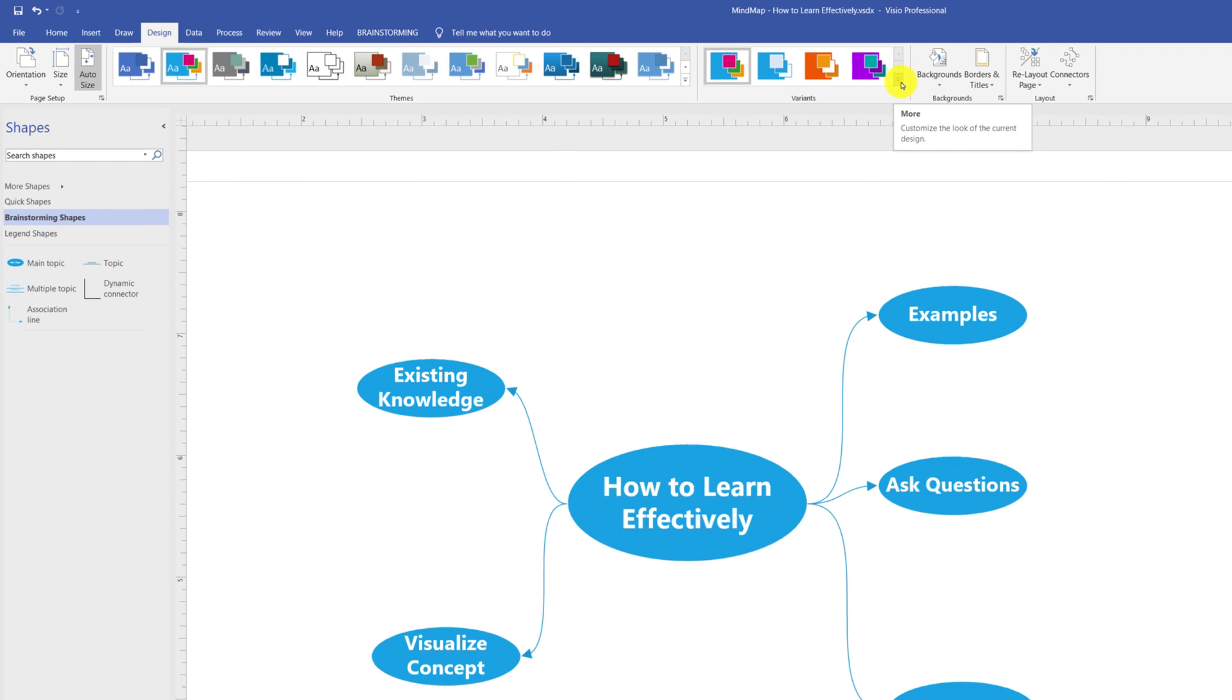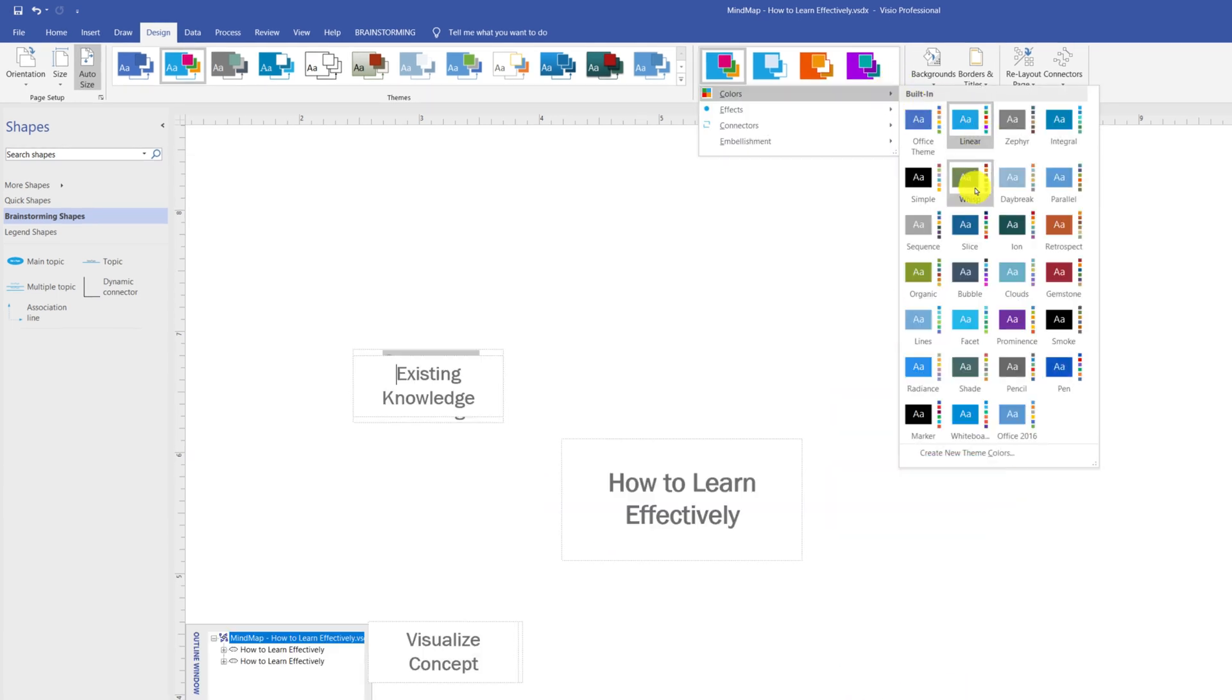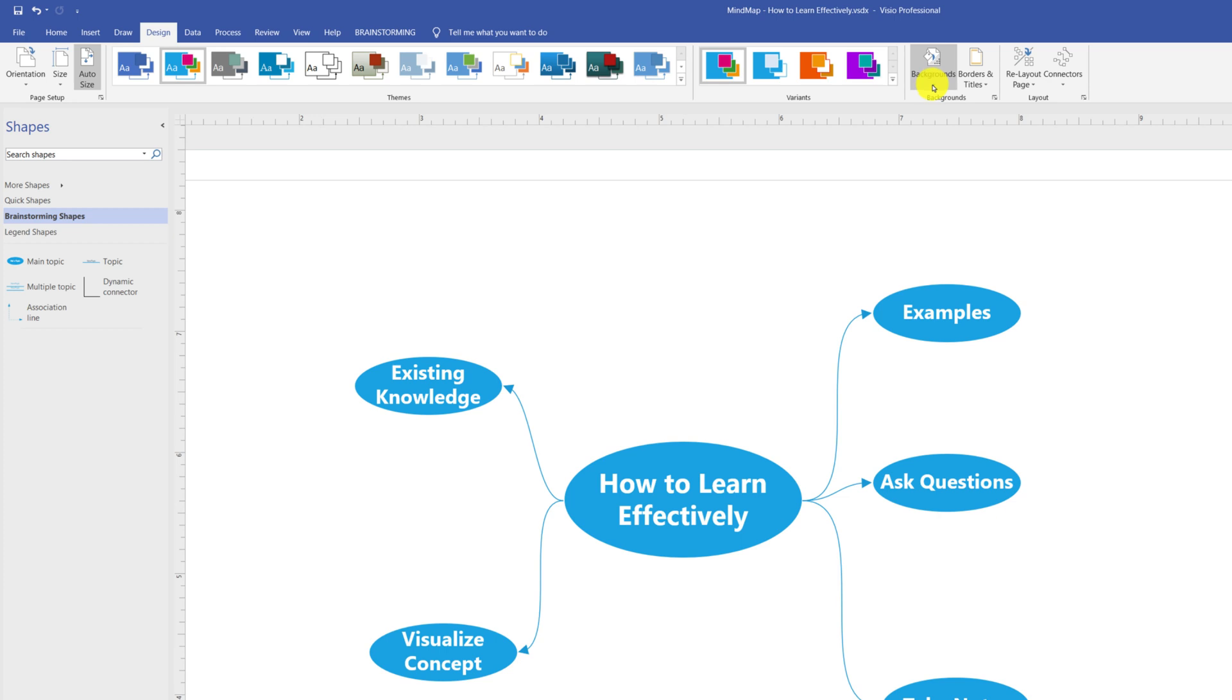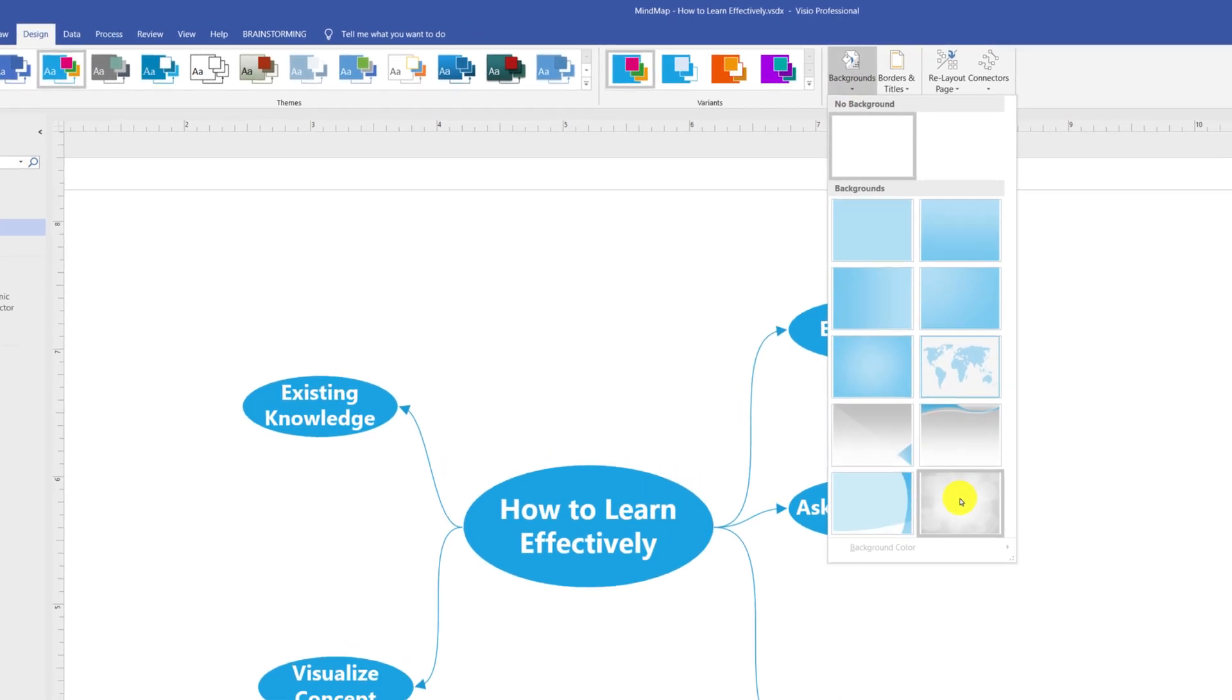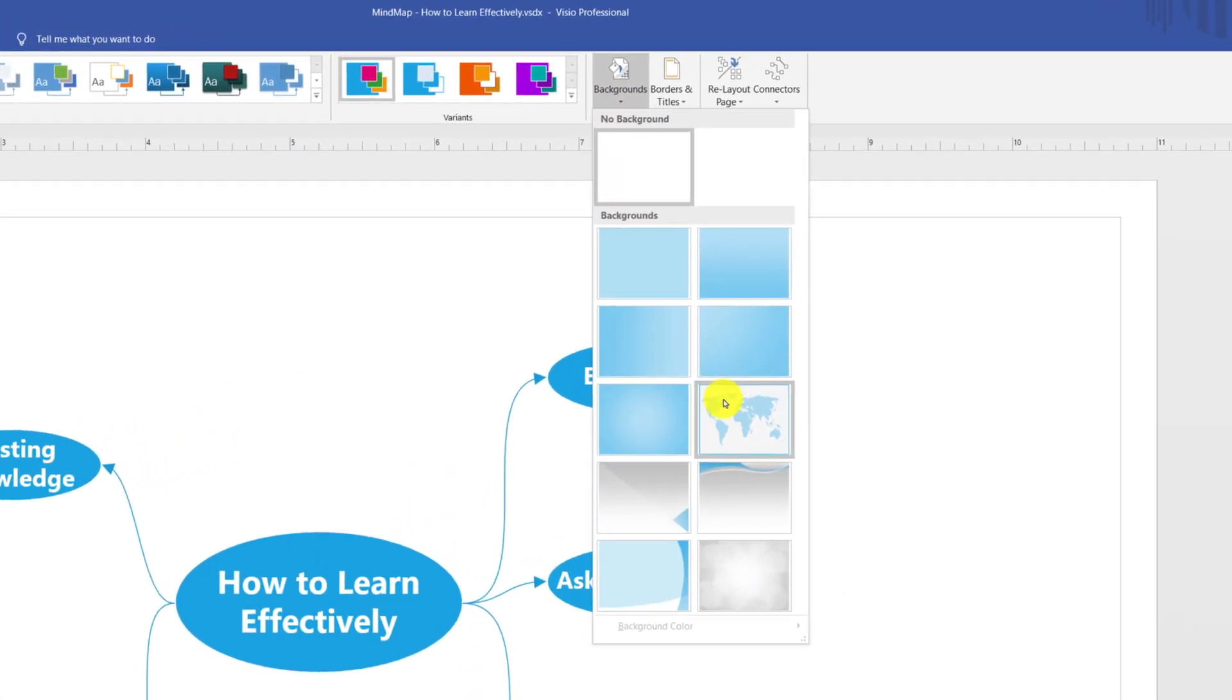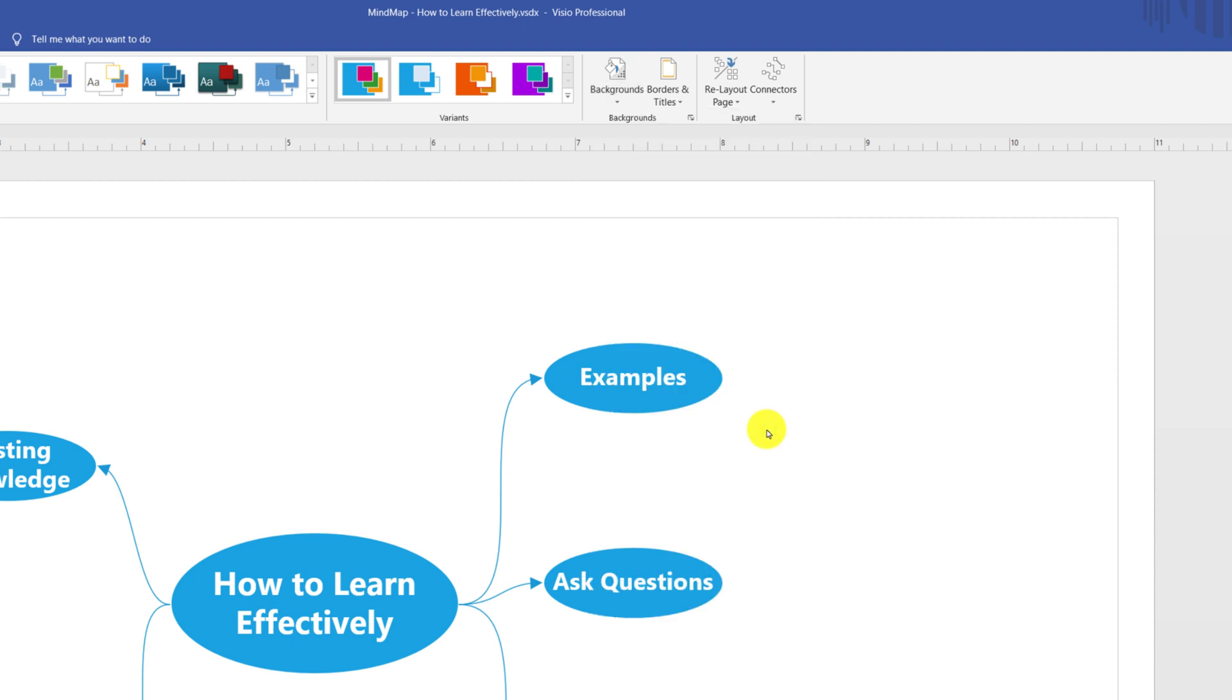Variants will keep all elements of the theme, but will allow you to just change the colors. You can also change the background of the diagram by picking a particular background that you might like, or uploading your own image for the background. I'm going to do undo and leave the background white because it's easier to see on the screen.